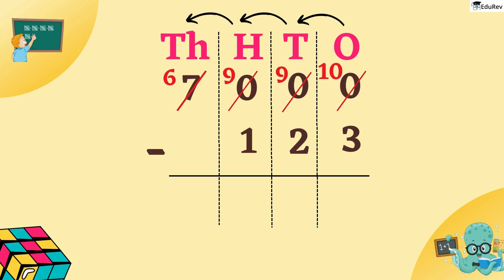So, in 1s place, 10 minus 3 is equal to 7. In 10s place, 9 minus 2 is equal to 7. In 100s place, 9 minus 1 is equal to 8. In 1000s place, 6 minus 0 is equal to 6.